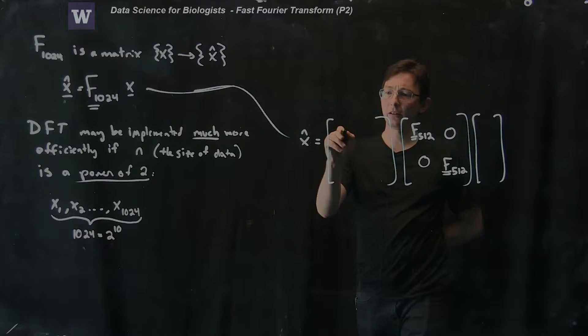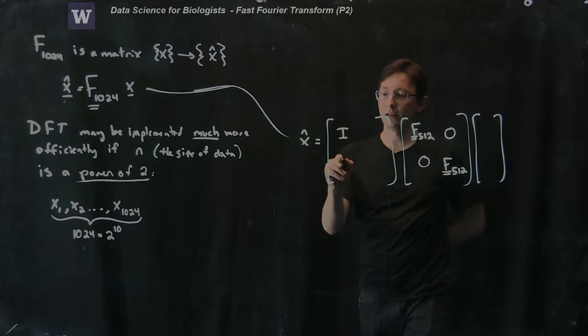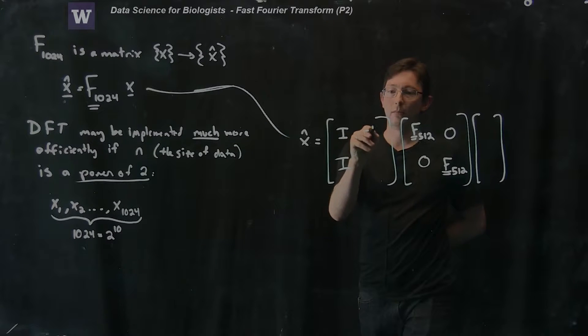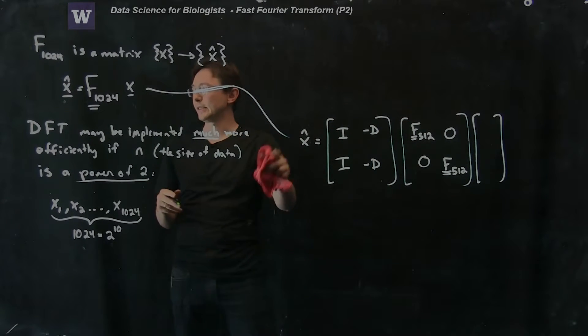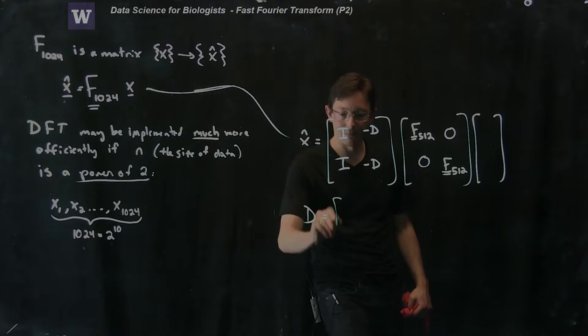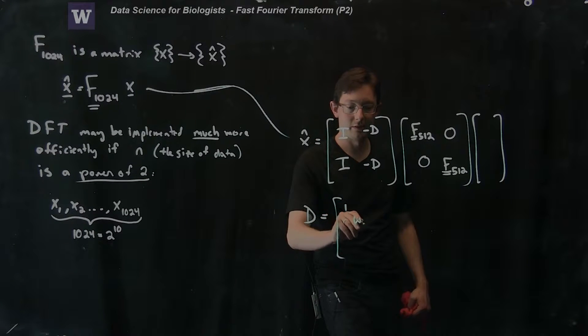Then here I have identity, identity, minus D, minus D, where D is this fancy matrix. D is a big matrix of diagonals.